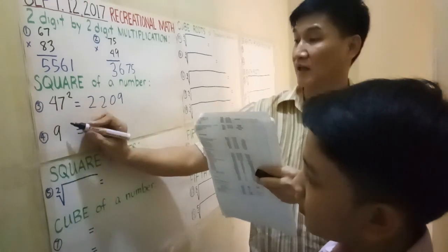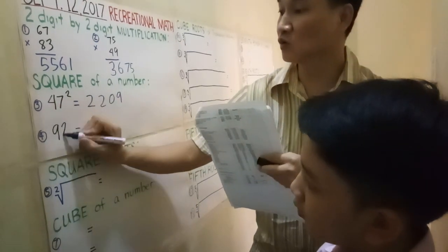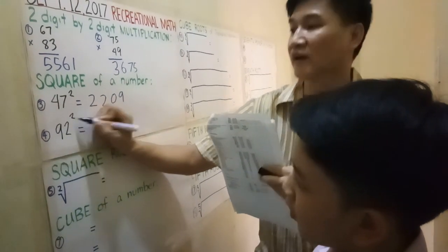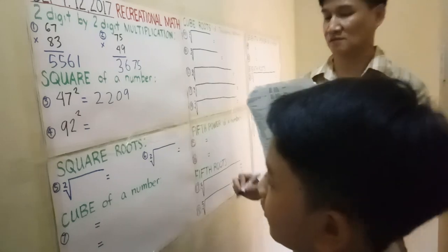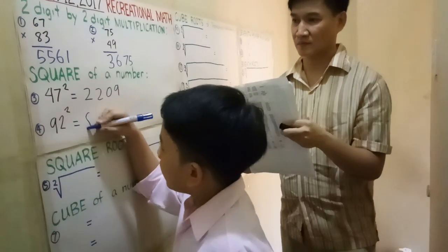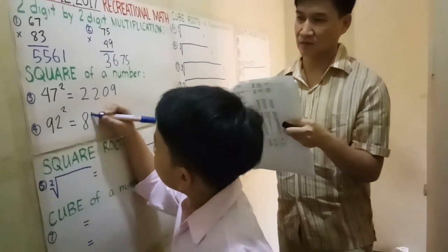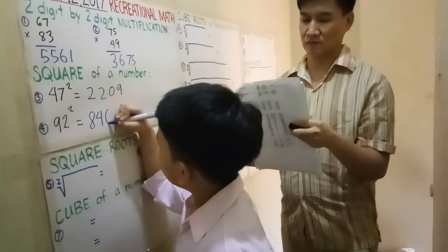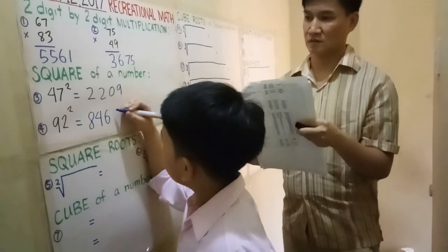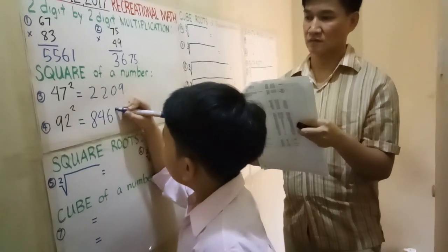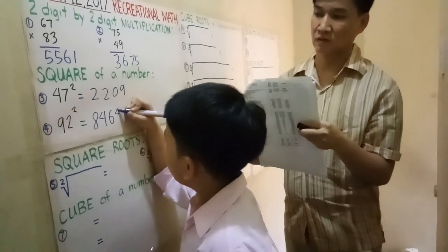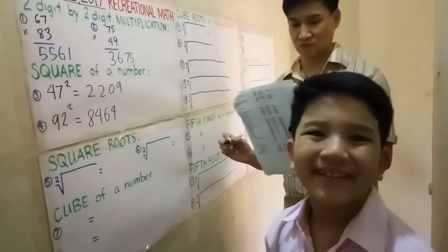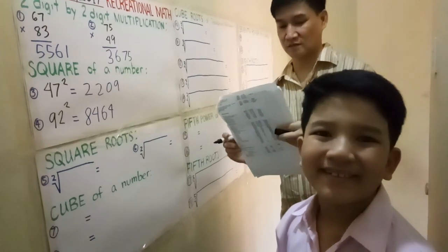92 squared. Answer: 8, 4, 6, 4. Good job. Correct.